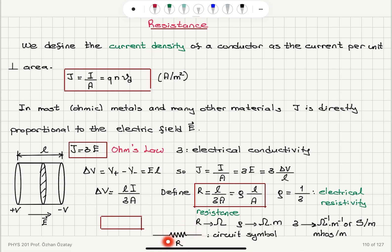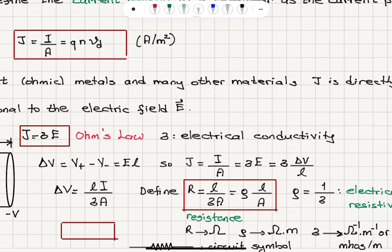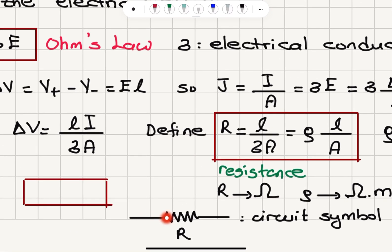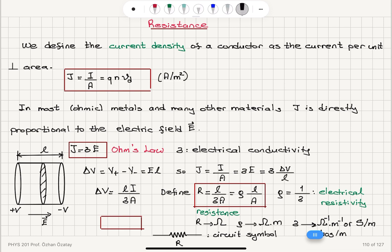The resistance circuit symbol is a triangular wave shape. With this definition of resistance, the potential difference between the two ends, ΔV, equals the current I multiplied by the resistance R. Ohm's law can be written either as J = σE, or equivalently as ΔV = IR — these two forms are shown to be equivalent.